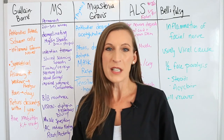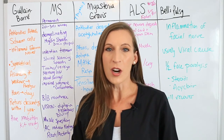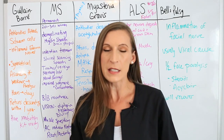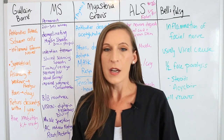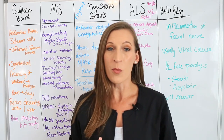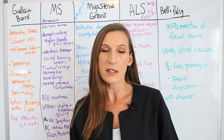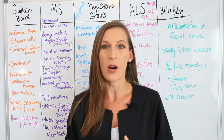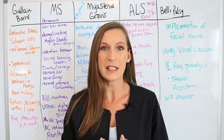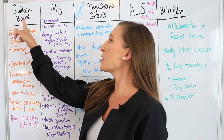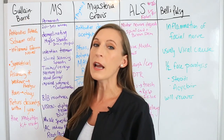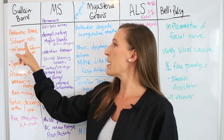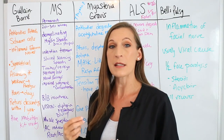I put together a little chart to help us look at all of these neuromuscular diseases together, to distinguish what's different from one to the next so you don't get too confused on how to remember all of these diseases. First is Guillain-Barré, and Guillain-Barré is when the antibodies attack the Schwann cells.